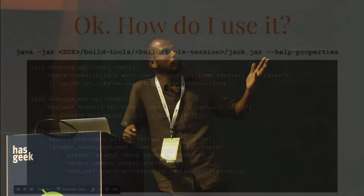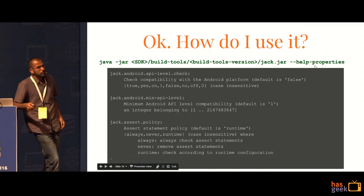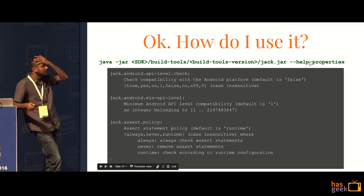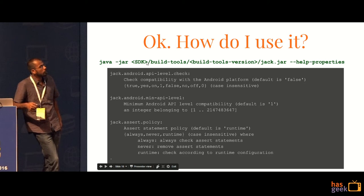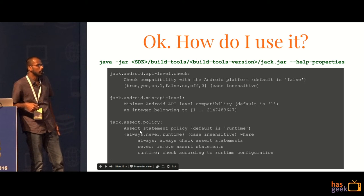If you want to set any additional parameters, you can do that as well. For example, Jack dot incremental sets the incremental build to true, so it would do incremental builds. You can check out what the different properties available are by running the Jack dot jar file — it is there in your build tools version folder. You could pass the help properties flag and it would return all the different available parameters. For instance, the assert policy parameter would allow you to set when you want the asserts to run — always, just at one time, or never.